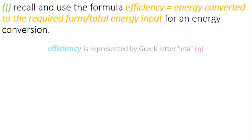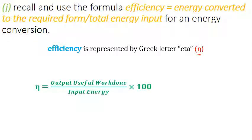Efficiency is represented by Greek letter eta. Eta equals output useful work done divided by input energy multiplied by 100, or output useful power divided by input power times 100. Remember, whenever we are talking about efficiency, it's always output upon input. Output always comes in the numerator and input in the denominator, multiplied by 100.